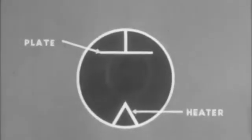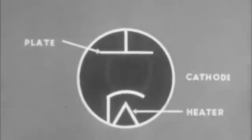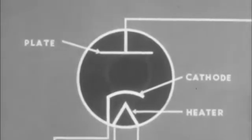Wires connecting the tube with various parts of a circuit are represented here by straight lines drawn to the several tube elements.